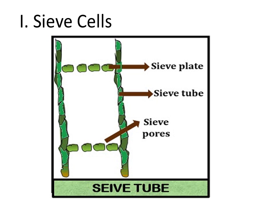So the sieve elements contain two components: the sieve tubes and the sieve cells. Sieve tubes are long, cylindrical tubes which are joined to each other from end to end, forming a tube-like structure.